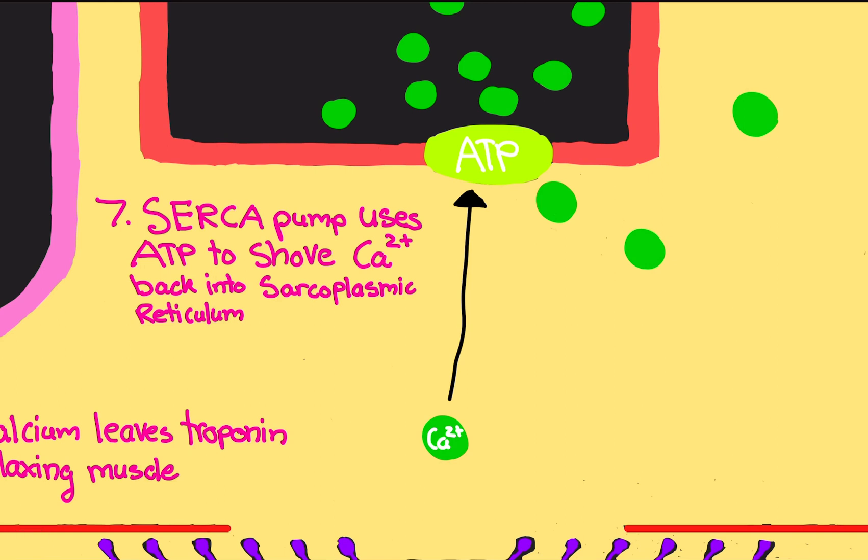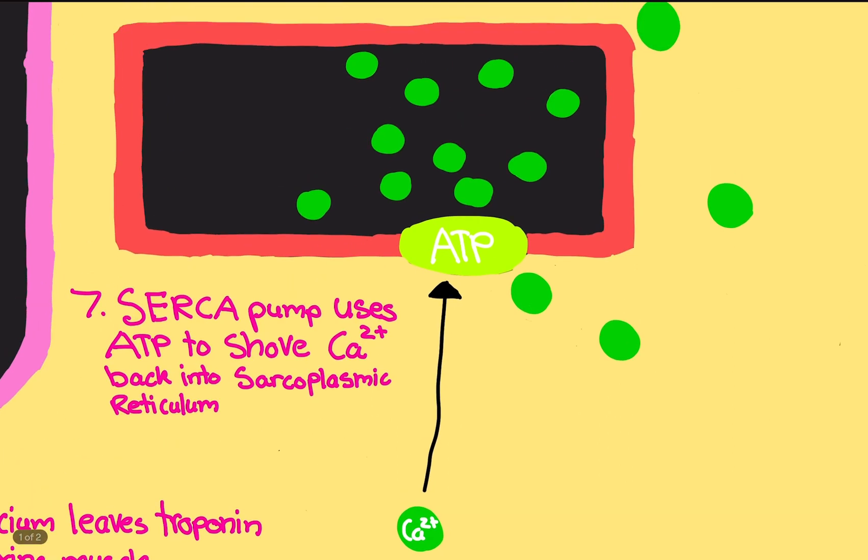There's something called the SERCA pump on the sarcoplasmic reticulum, our container. Think about it like another lid on the container, or like a side port on the container. What the SERCA pump does is it uses ATP, takes calcium, and shoves it back into the sarcoplasmic reticulum. Remember there's calcium inside the sarcoplasmic reticulum—not all of it left. There's a high amount of calcium inside, so by properties of diffusion, calcium does not want to go inside the sarcoplasmic reticulum because there's already too much inside of it.